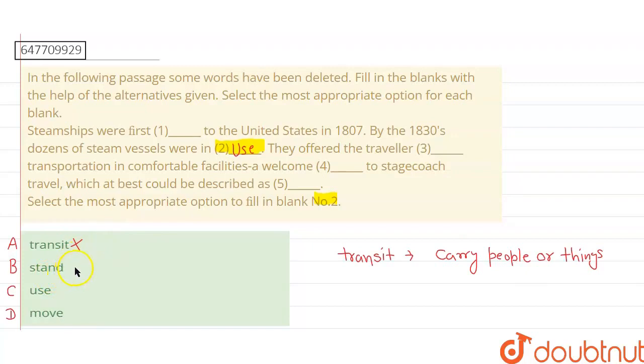Stand - this is incorrect. Use is the correct one. Move - this is also incorrect. Therefore, by the 1830s dozens of steam vessels were in use. So the right option is option C.